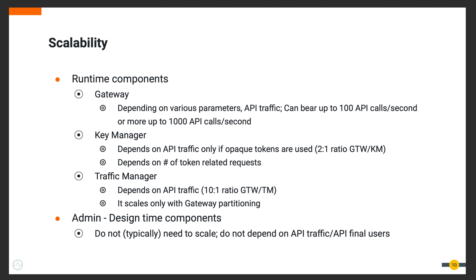When sizing the number of key managers, you also have to consider the number of final users and the expiration time of tokens, as these factors impact the number of token invocations. With higher expiration time and gateway token caching enabled, the key manager can sustain a higher number of gateway nodes. WSO2 lab tests have revealed the traffic manager can roughly handle up to 10 gateways. If you need more than 10 gateways, you can add more traffic managers, but this is beneficial only if you statically partition your gateways across different traffic managers.